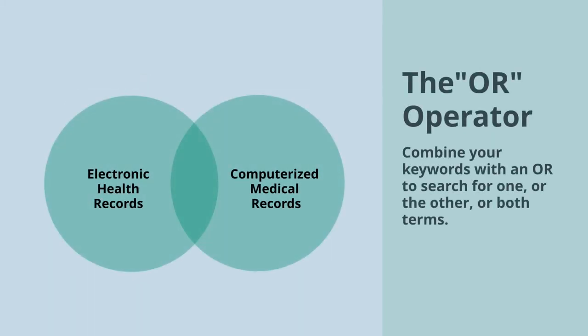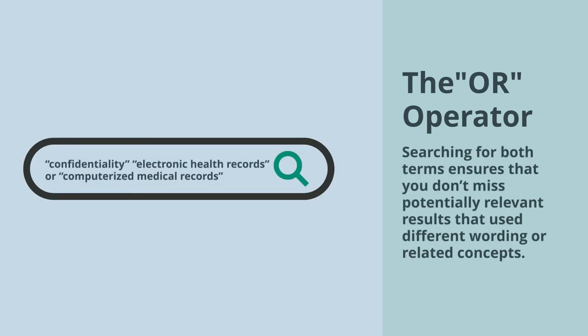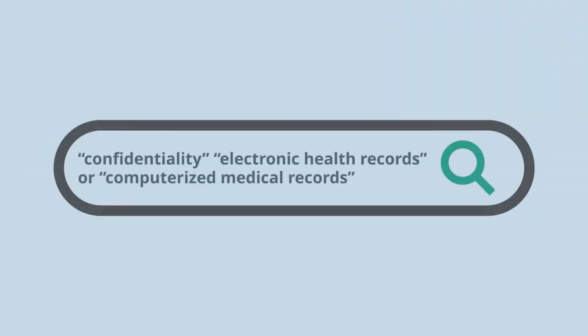Other operators can also be used. For example, combine your keywords with an OR to search for one or the other or both terms. Searching for both terms ensures that you don't miss potentially relevant results that use different wording or related concepts. Be careful.